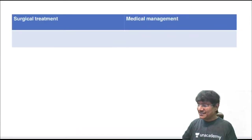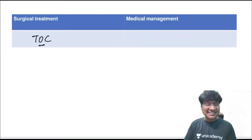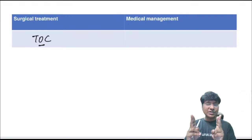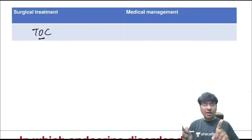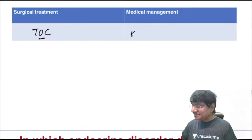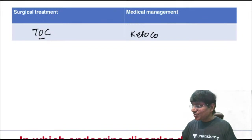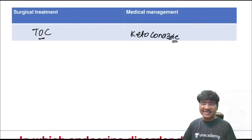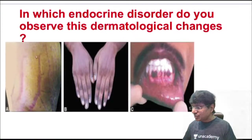Treatment of choice in Cushing's is surgery: pituitary adenectomy or adrenal adenectomy. When the patient cannot undergo surgery, medical adrenalectomy is done with ketoconazole — an antifungal that acts as an adrenal enzyme inhibitor, preventing steroid synthesis.